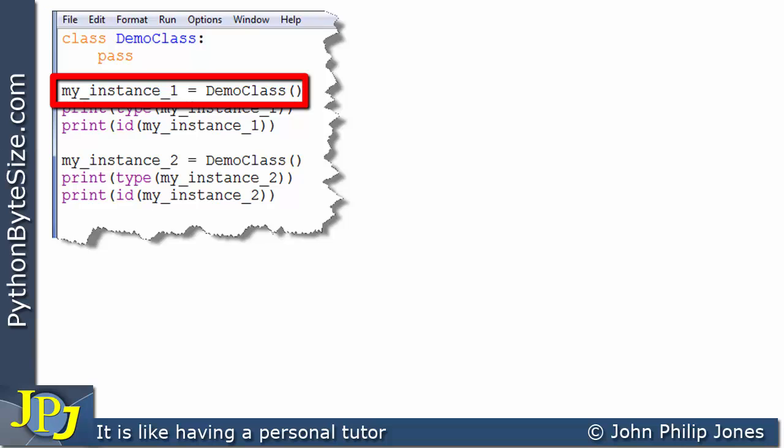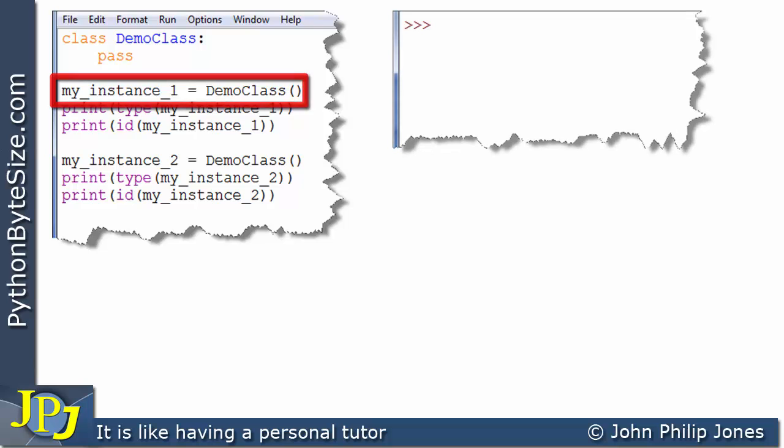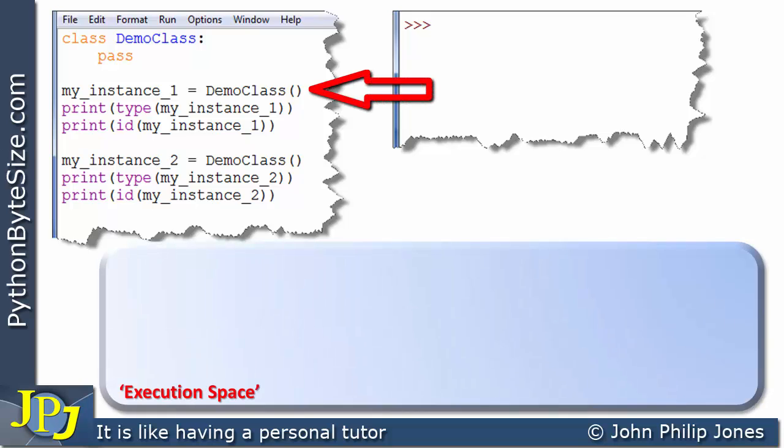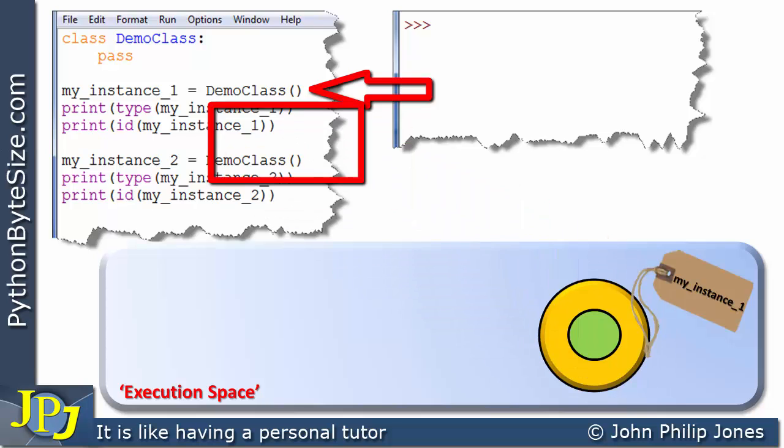If we look at this particular line, you can see it's my_instance_1 is assigned DemoClass. In other words, an object whose type is DemoClass. What happens here is this is going to create an object, and this object is going to be labeled with my_instance_1. We've produced an instance of this class.